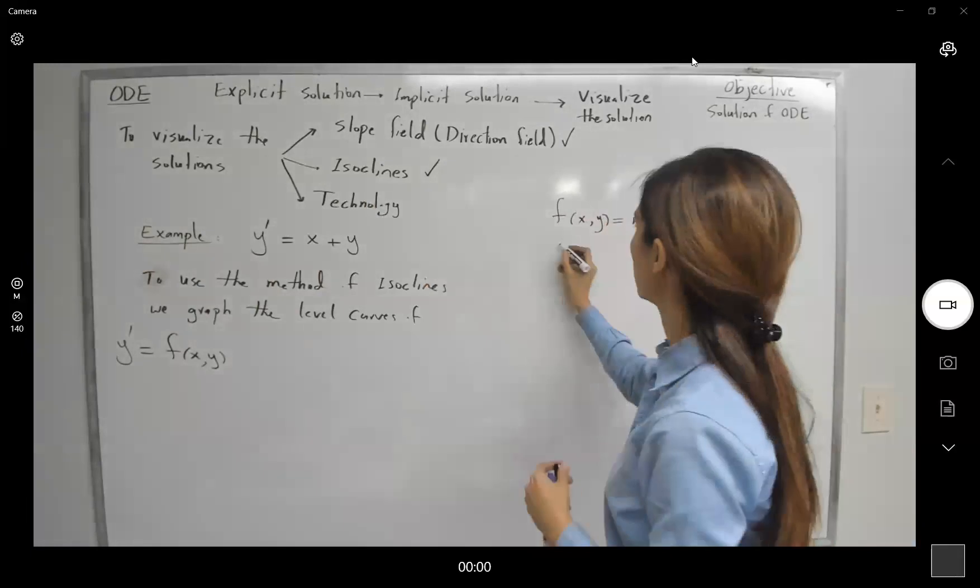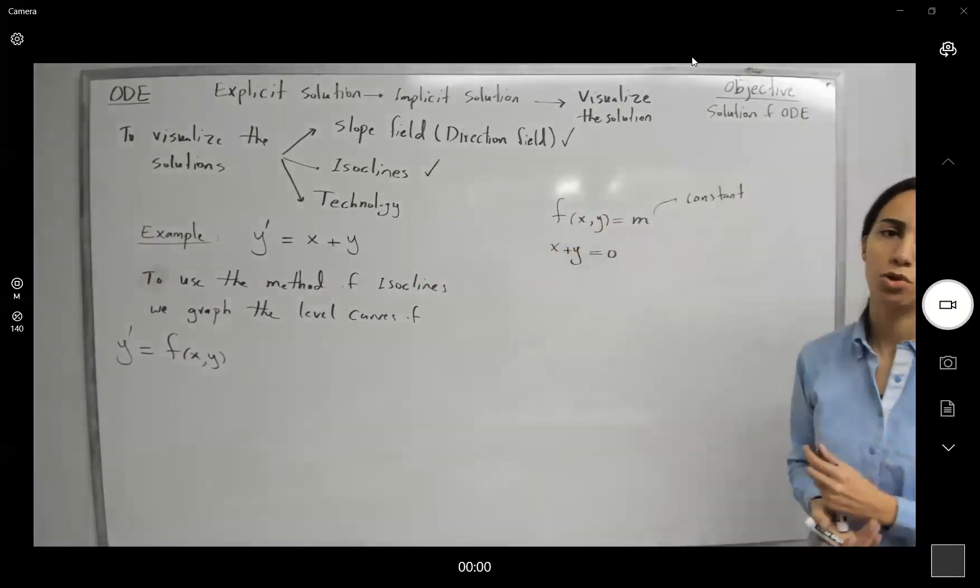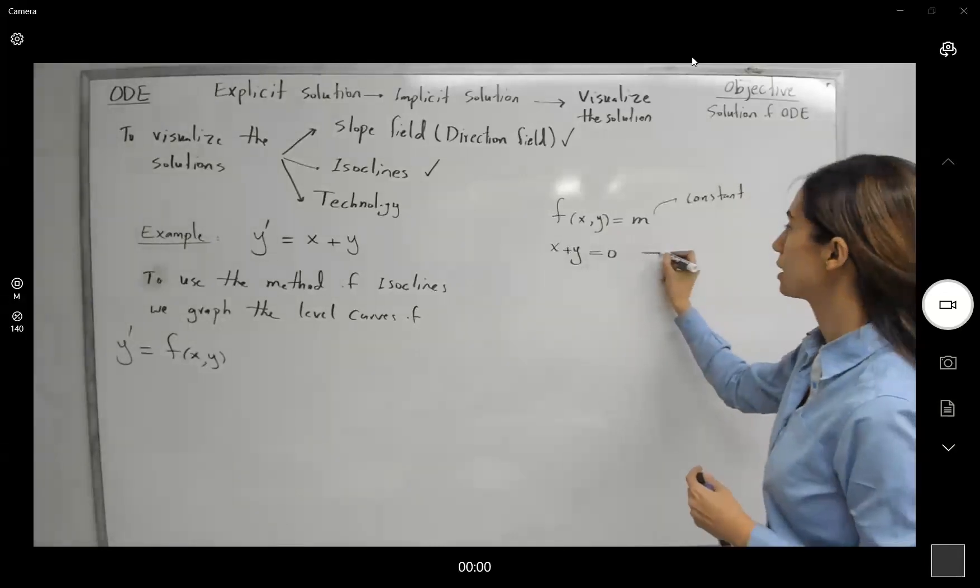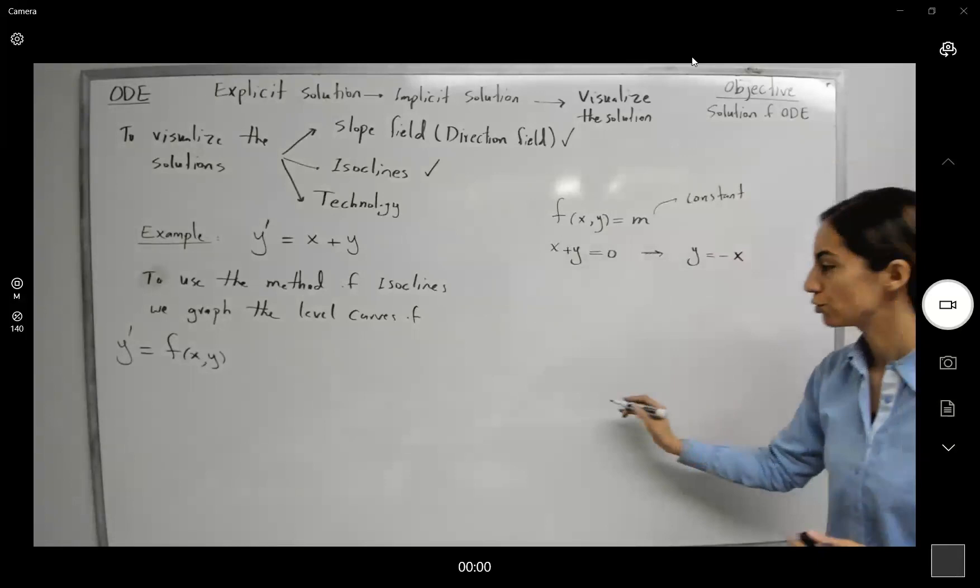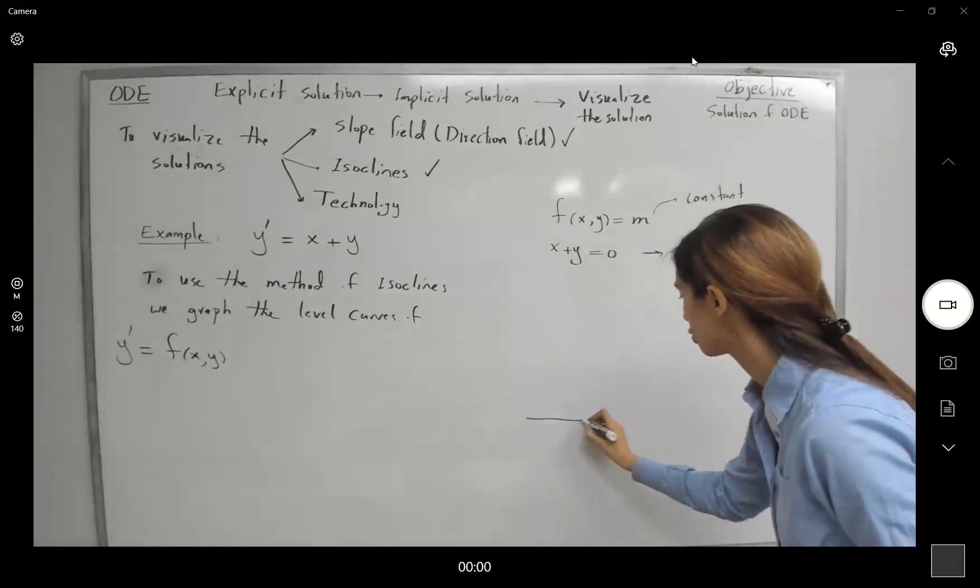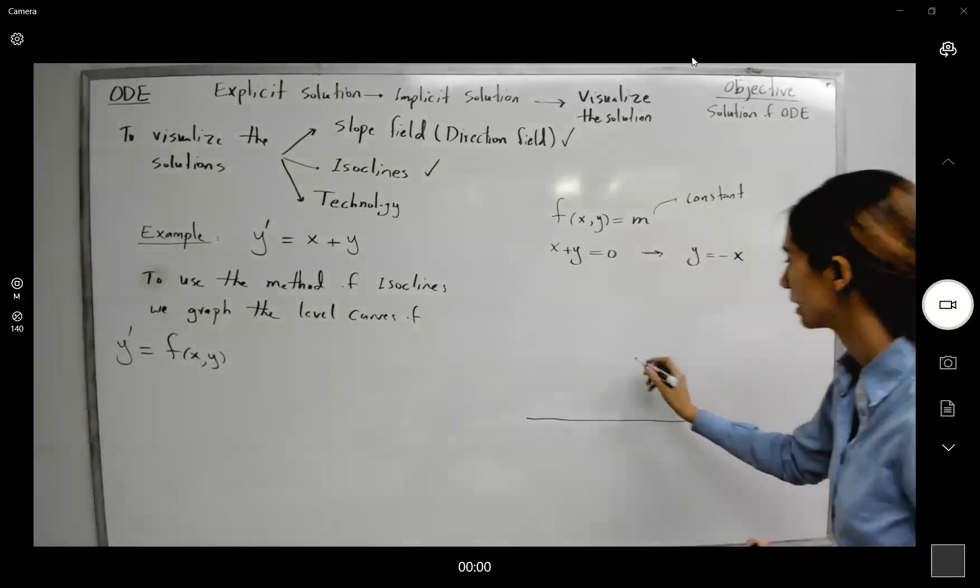For example, in this case, we have x plus y. Let us set it equal to zero. M is equal to zero. In this case, we have y equals to minus x. What are we going to do? We're going to use some dashed lines to represent y equals to negative x.